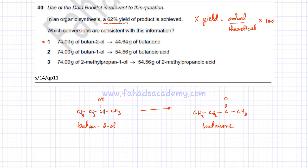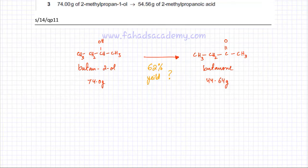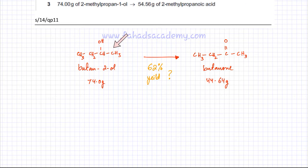We are given 74 grams of butane-2-ol and 44.64 grams of butanone produced. We need to figure out whether this represents a 62% yield. Looking at the reaction, one mole of butane-2-ol produces one mole of butanone, so the mole ratio is exactly 1:1.